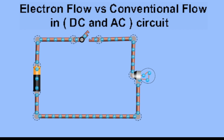Good day everyone, welcome to the Engineering E-Learning channel. For today's video we're going to discuss the flow of current — conventional flow versus electron flow. To start our discussion, as you can see on the screen, we have an open DC circuit with a source, a battery, a copper conductor,